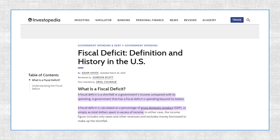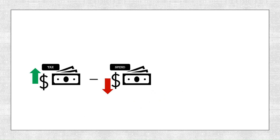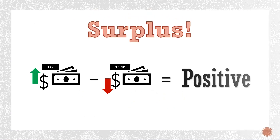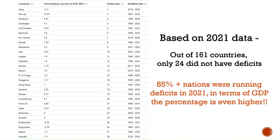Let's start with what exactly is fiscal deficit. It is a shortfall in government's revenue or income compared with its spending. A government that spends beyond its means has a fiscal deficit. On the flip side, a government that spends less than what it brings in ends up with a fiscal surplus — pretty rare these days to find such prudent national governments that have a budget surplus or at the very least run a balanced budget.